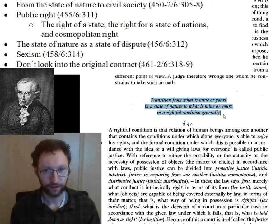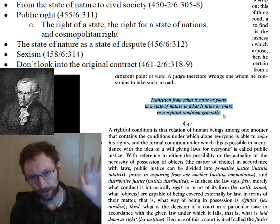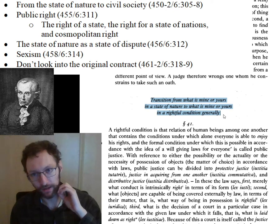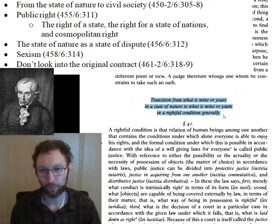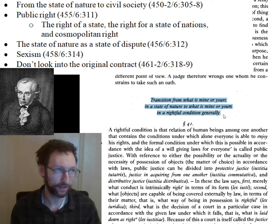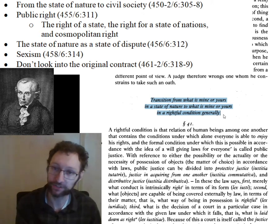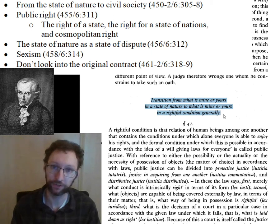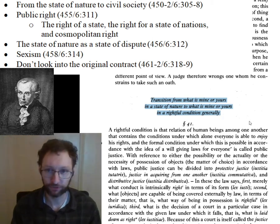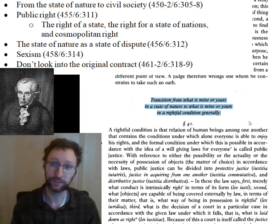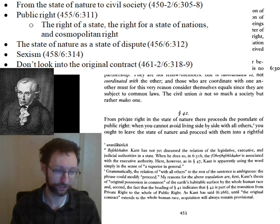Although Kant hasn't been making a lot out of this point, we've just been reading section one, Private Right, which is broadly about what belongs to you and me in a state of nature — or really what belongs to us generally. It turns out the answer to what the state of nature is like is basically: just immediately get yourself into the civil condition. That's the only rightful thing you're allowed to do. So now it's time to transition from the state of nature to civil society.